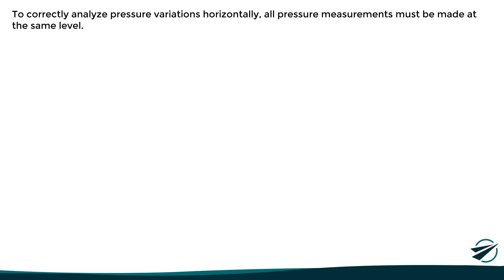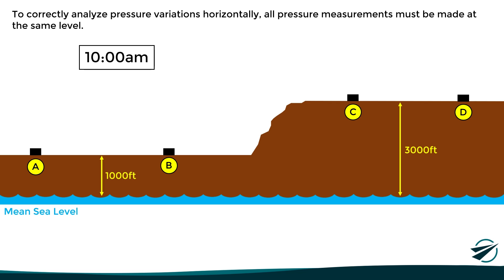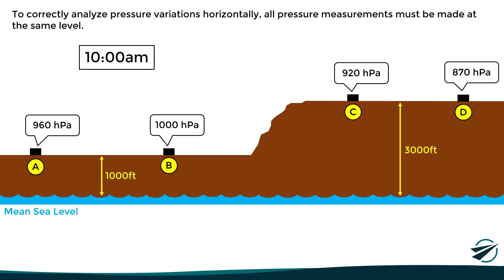Let's see an example to understand this better. Suppose that we have four weather stations reporting their atmospheric pressure. In this case, stations A and B are at the same level, specifically at 1,000 feet above mean sea level. And on the other hand, stations C and D are at an elevation of 3,000 feet. With this in mind, let's say that all four stations report their pressure at 10 a.m. There is no problem if we directly compare the pressure of A and B, since both stations are at the same level, and similarly there would be no problem comparing the pressure of stations C and D.